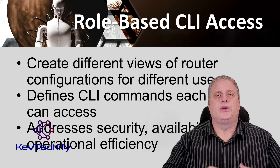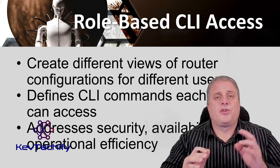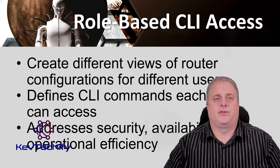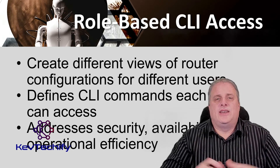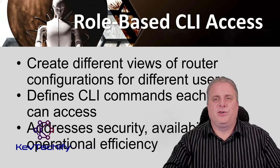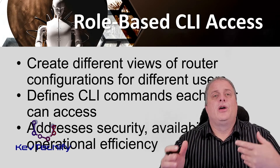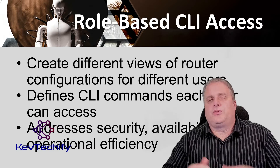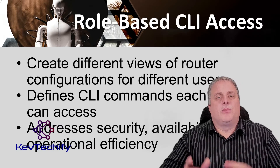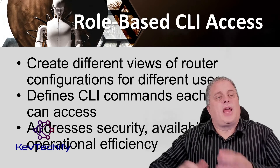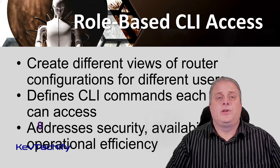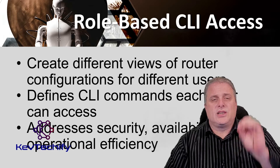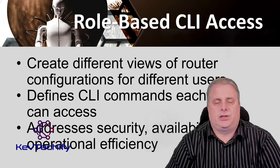The Cisco IOS release 12.3(11)T feature provides finer, more granular access by controlling which commands are available for specific roles. Role-based CLI access enables the network administrator to configure different views of router configuration for different users. Each user could have a different view — maybe somebody is responsible for IP addressing and they would only have access to that, where somebody responsible for routing protocols would have access to that material. Each view defines the CLI commands that each user can access. This addresses security, availability, and operational efficiency.